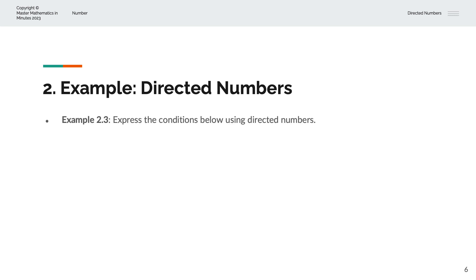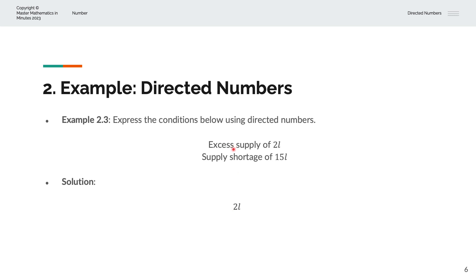In the third example, we're asked to express the conditions below using Directed Numbers. We have an excess supply of 2 liters and a supply shortage of 15 liters. So the answer is positive 2 liters, where the positive sign indicates excess, and minus 15 liters, where the minus sign indicates a shortage.